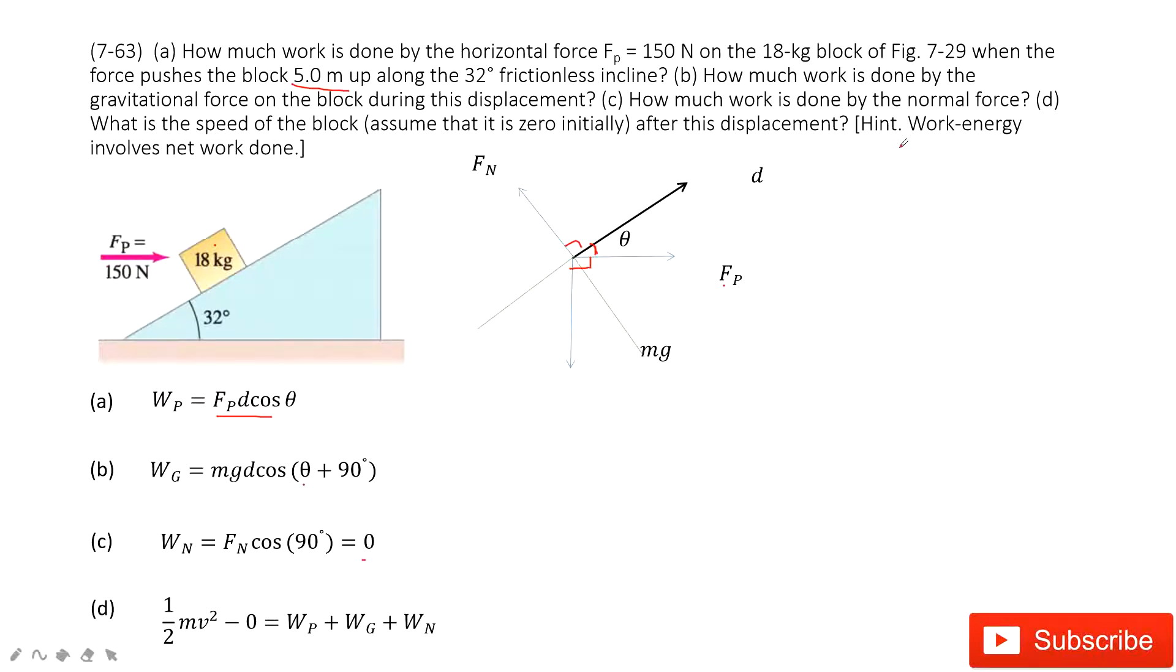The next one, what is the speed of this object after its displacement? So this one is very important. Assume it is zero initial. So that means the initial velocity is zero. So the initial kinetic energy is zero.